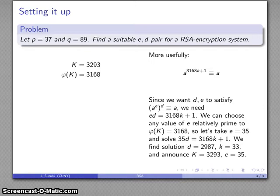And I'll find the solutions: d equals 2987, k equals 33. I don't care what k is, but I do need to know what d is. And I'm going to announce k, this product of primes, and e, this public exponent 35. And there's my e and d pair, 35, 2987, that I can use for RSA encryption.